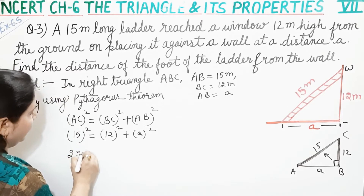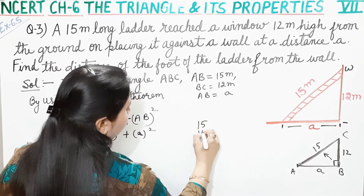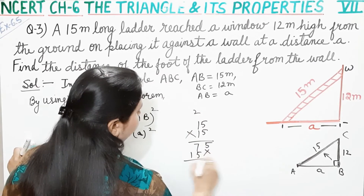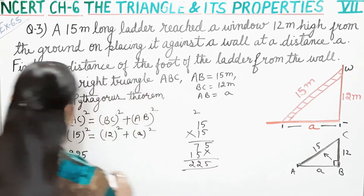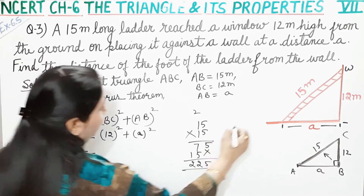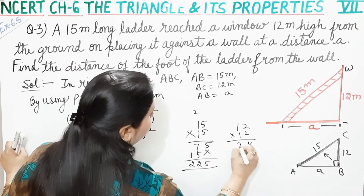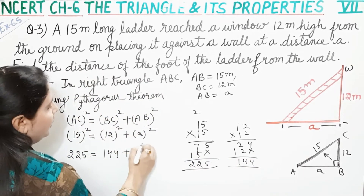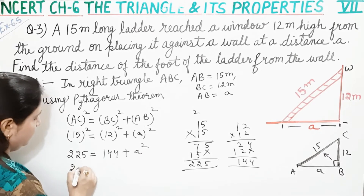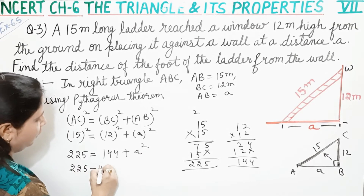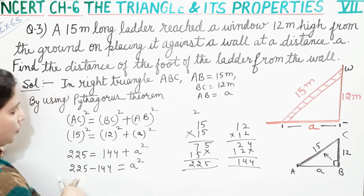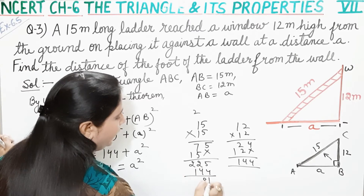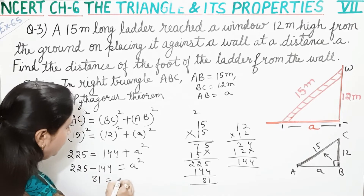15 ka square hota hai 225 — aapko multiply karke dekhna padega: 15 into 15, 5×5=25, carry 2, 5×1=5+2=7, 1×5=5, 1×1=1, so 225. Yeh aajayega aapka 225, is equal to 12 ka square, yeh hota hai 144. Toh 144 plus A ka square, 144 udhar aayega, minus ho jayega: 225 minus 144 kitna hoga? Aata hai 81. Toh 81 is equal to A ka square.